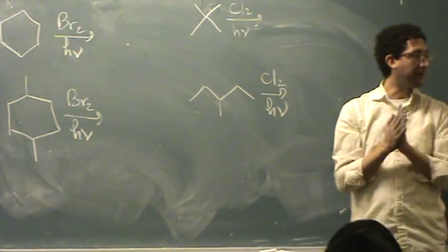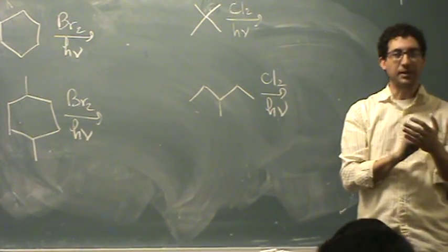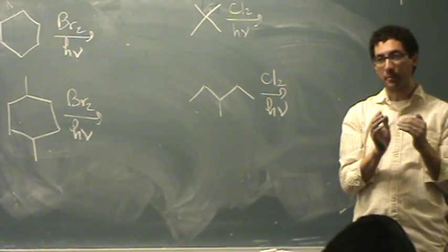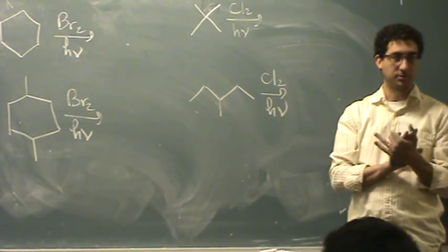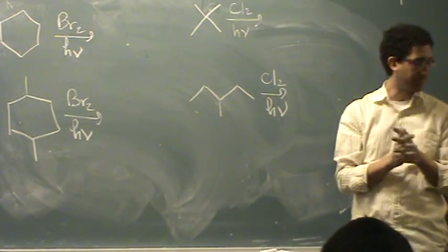On the arrow, or around the arrow, you'll see either Br2 or Cl2. Above the arrow, and usually below the arrow, the word light or H nu, representing light or energy.